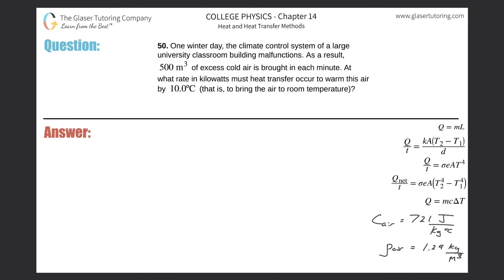Number 50. One winter day, the climate control system of a large university classroom building malfunctions. What else is new? As a result, 500 cubic meters of excess cold air is brought in each minute. At what rate in kilowatts must heat transfer occur to warm this air by 10 degrees Celsius, that is, to bring it to room temperature?